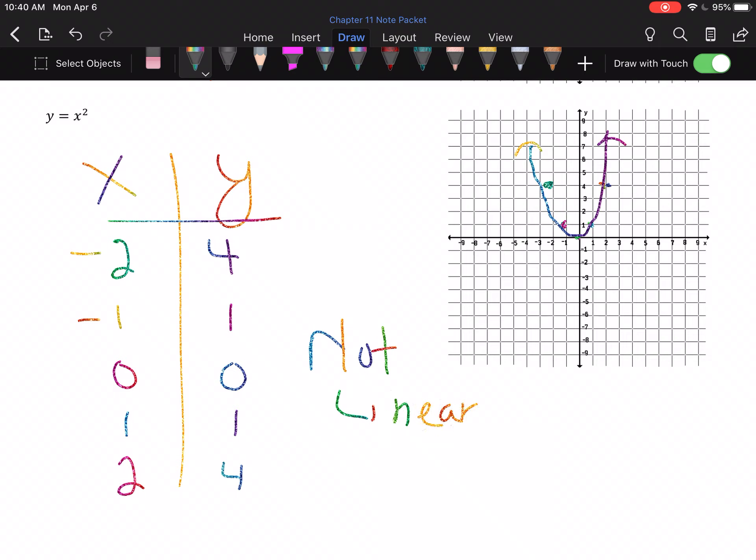It's called a parabola. Any equation that has an X squared as its highest term, which that'll make a little more sense in Chapter 13. But any equation with an X squared as its highest term is called quadratic. And its shape is a parabola. It's kind of a U shape. For us right now, the key thing is that's definitely not a line.